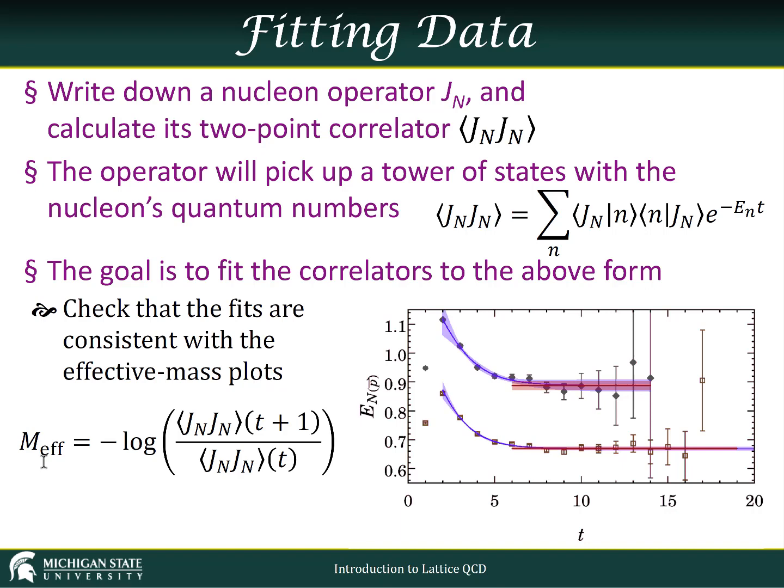Now you may notice that there's only one exponential in the equation that I just described to you. Where did the infinite tower go? Well if we wait to large enough times, this exponential factor will suppress all of the excited states. The signals from each of the excited states is going to be decreasing exponentially as a function of time relative to the ground state.